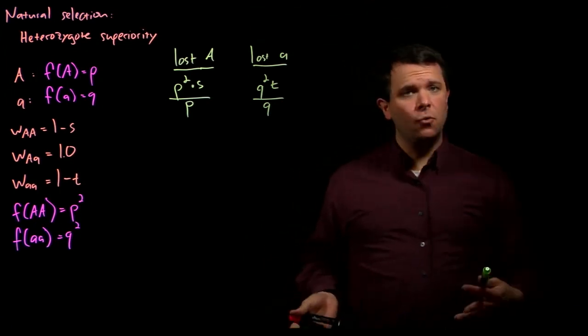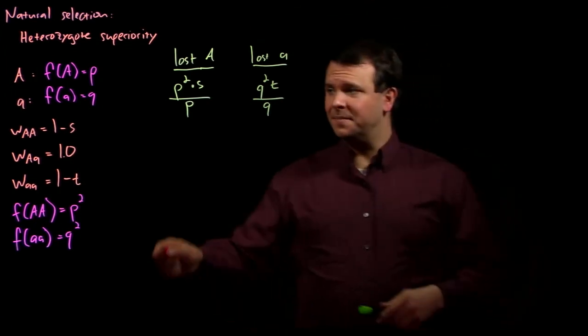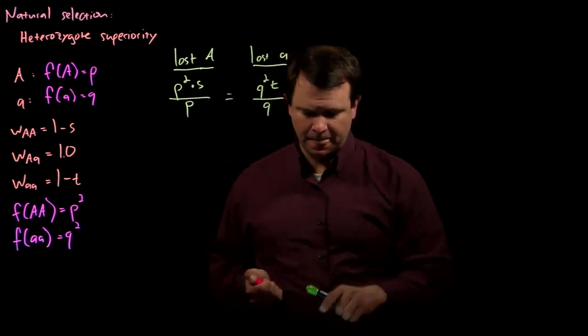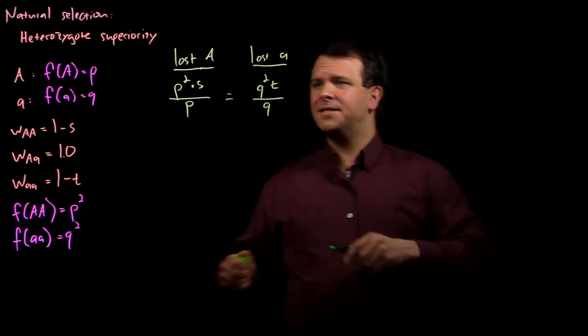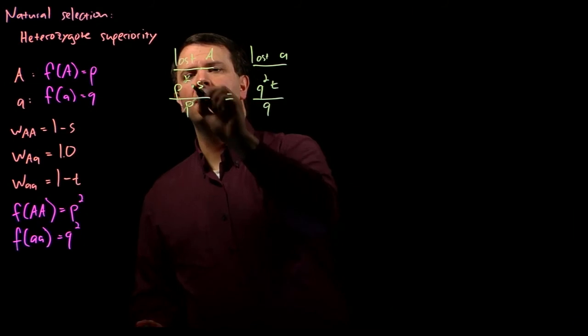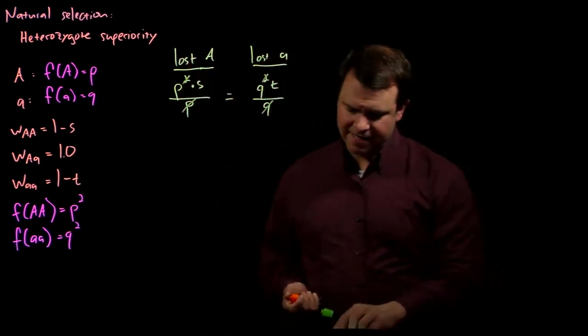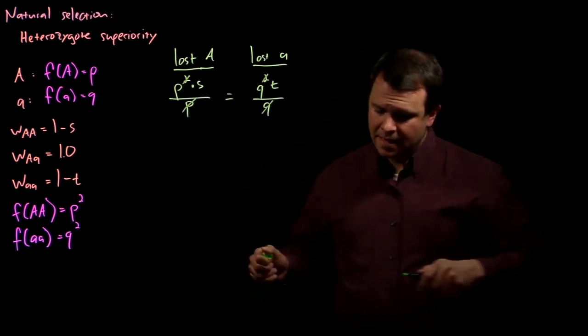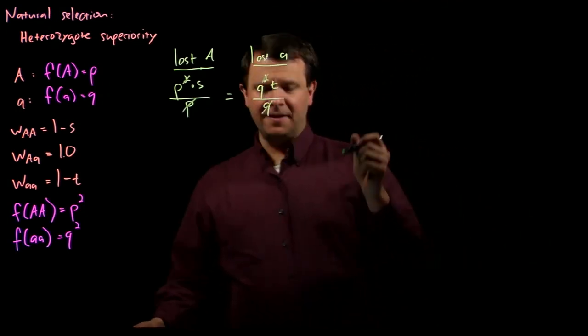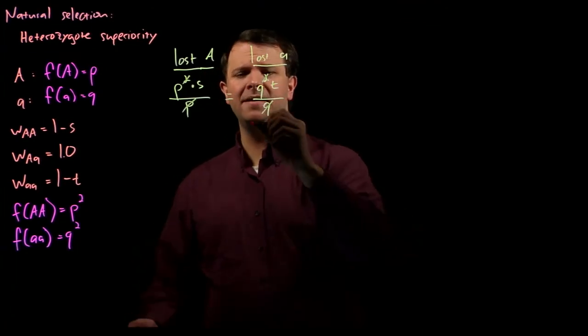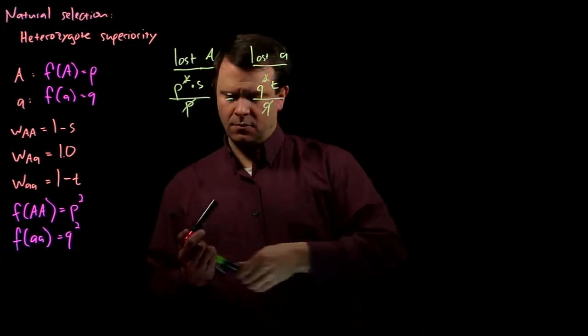And of course, at equilibrium, these two proportions are balanced. And so, we can cancel out a p and a q on each side, and then we replace q on this side with 1-p.